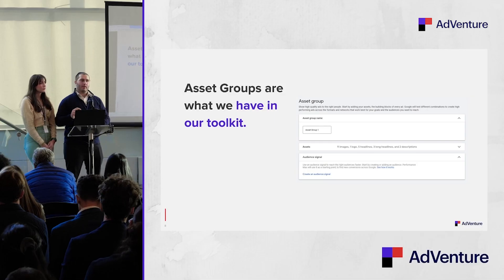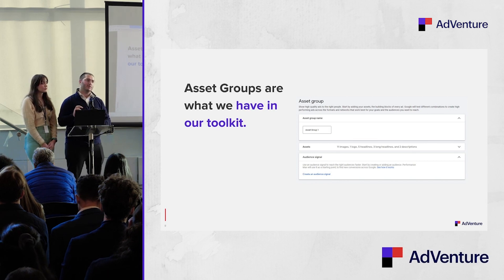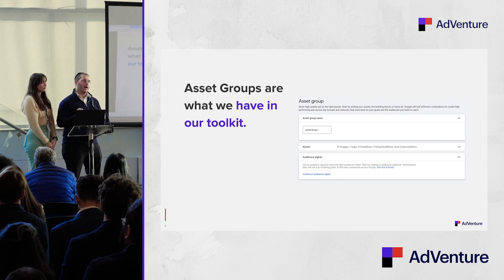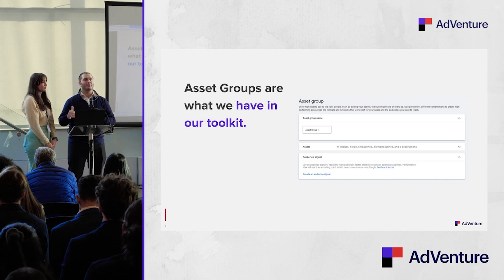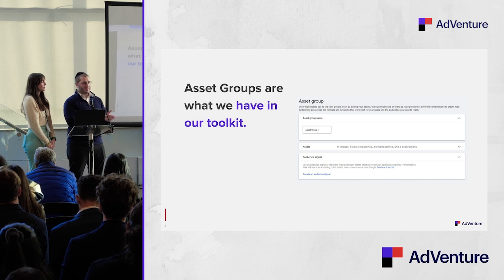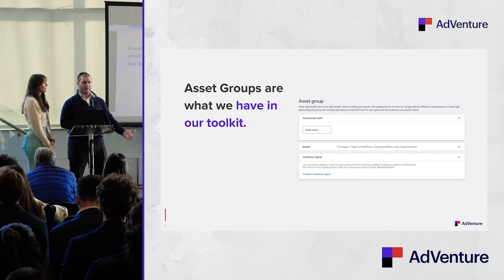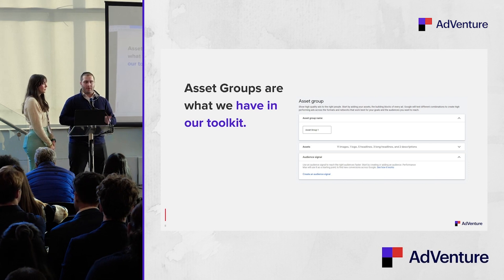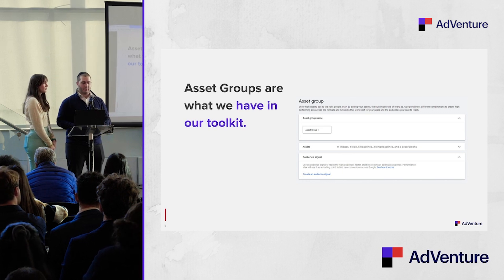The most important — and a little confusing — feature is that asset groups, which include audiences, descriptions, and all the elements we spoke of, do not yet have reporting at the asset group level. We're hoping Google gives us asset group reporting at some capacity, because it would be very insightful to say, let's start with this asset group with this specific narrative of who will convert best. For now, if you're testing, make new campaigns so you can see structured performance and reporting in an individualized set.